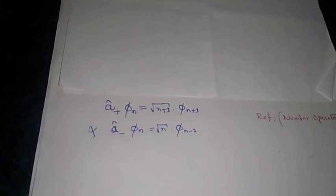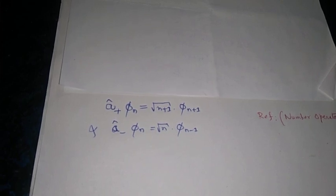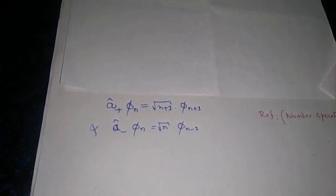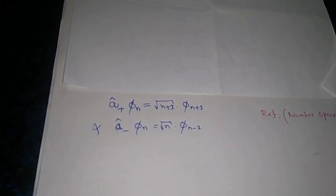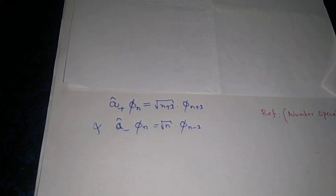We can find that A plus when operating on phi n takes you to phi n plus 1 level with a factor of square root of n plus 1. And A minus when acting on phi n takes you to square root of n into phi sub n minus 1 state.